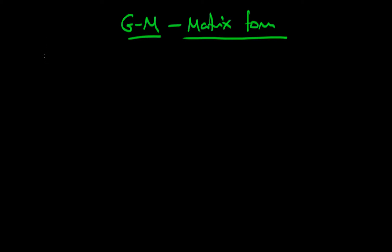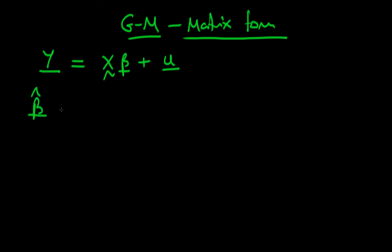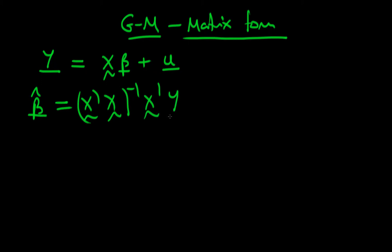The idea here is that we have some population model which is y is equal to some matrix of variables x times beta plus some population error u. And the normal form for the least squares estimator is beta hat is equal to x-prime x to the power minus 1 times x-prime times the vector of dependent variables y.